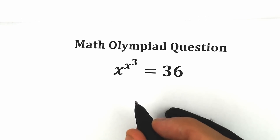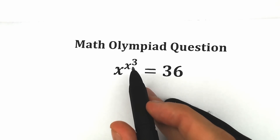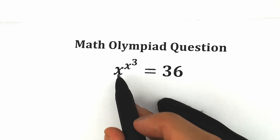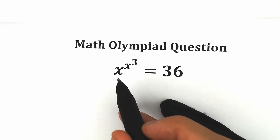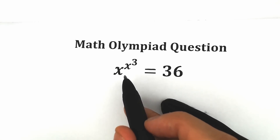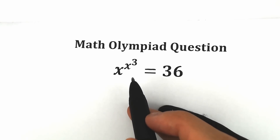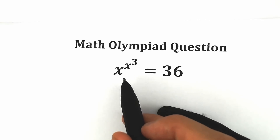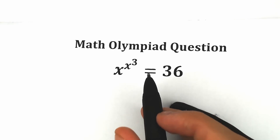Hello everyone, happy to see you here on my channel HiMathematics. Today we have a really great question: x to the power x to the power 3 equals 36. A lot of students are confused about this expression on the left side because we don't have x cubed — we have x to the power x to the power 3, which turns into a big argument. In this video I'm going to fully explain how to solve this correctly, step by step. Before solving, you can pause the video and write your solution down in the comment section — it will be really interesting to check answers at the end because this is a very tricky question.